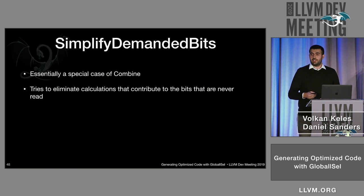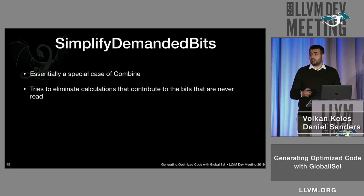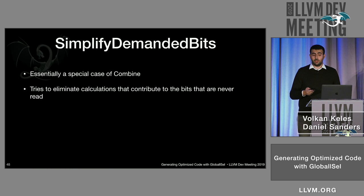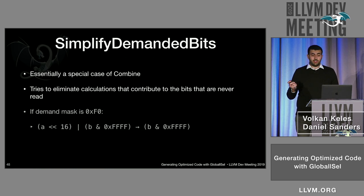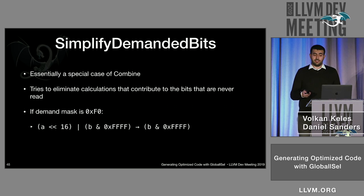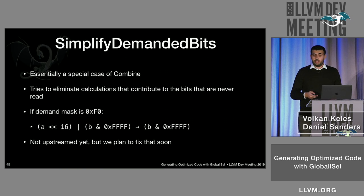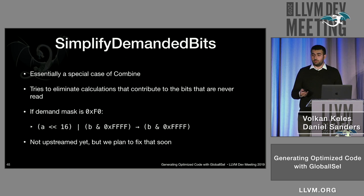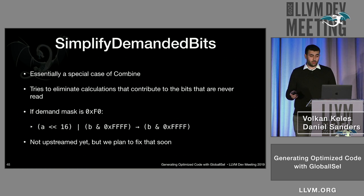Our last component is Simplified Demanded Bits. It's essentially a special case of a combine that tries to eliminate calculations contributing to bits that are never read, using a demand mask. For example, we don't actually need a shift operation if we don't demand anything beyond 16 bits. This is not available upstream yet, but we plan to upstream it soon and add more optimizations.